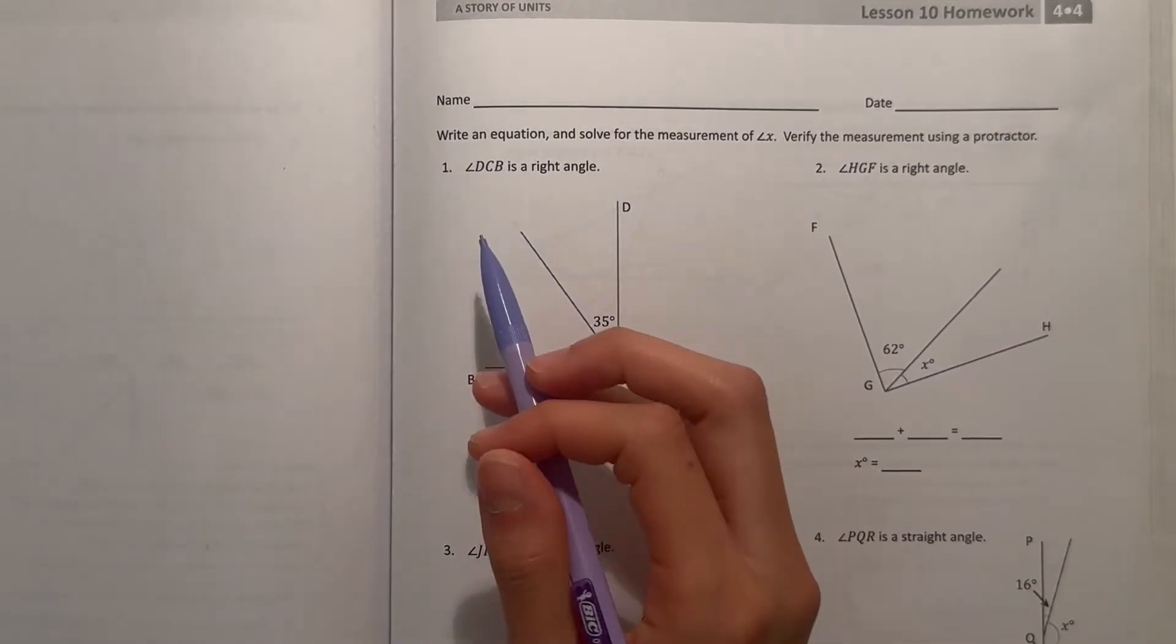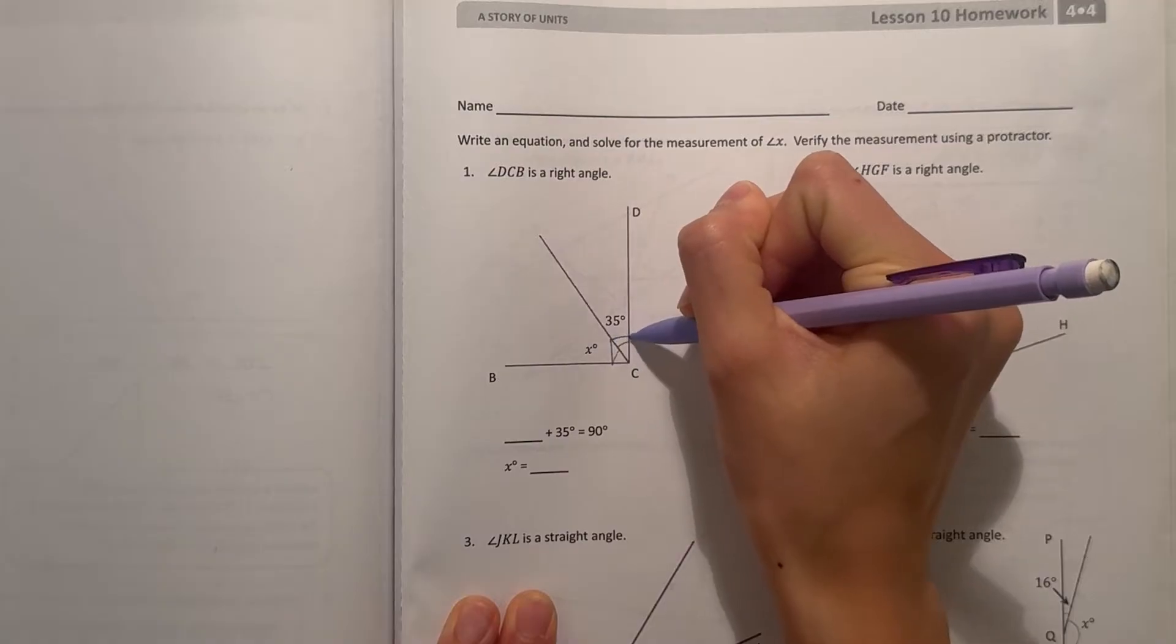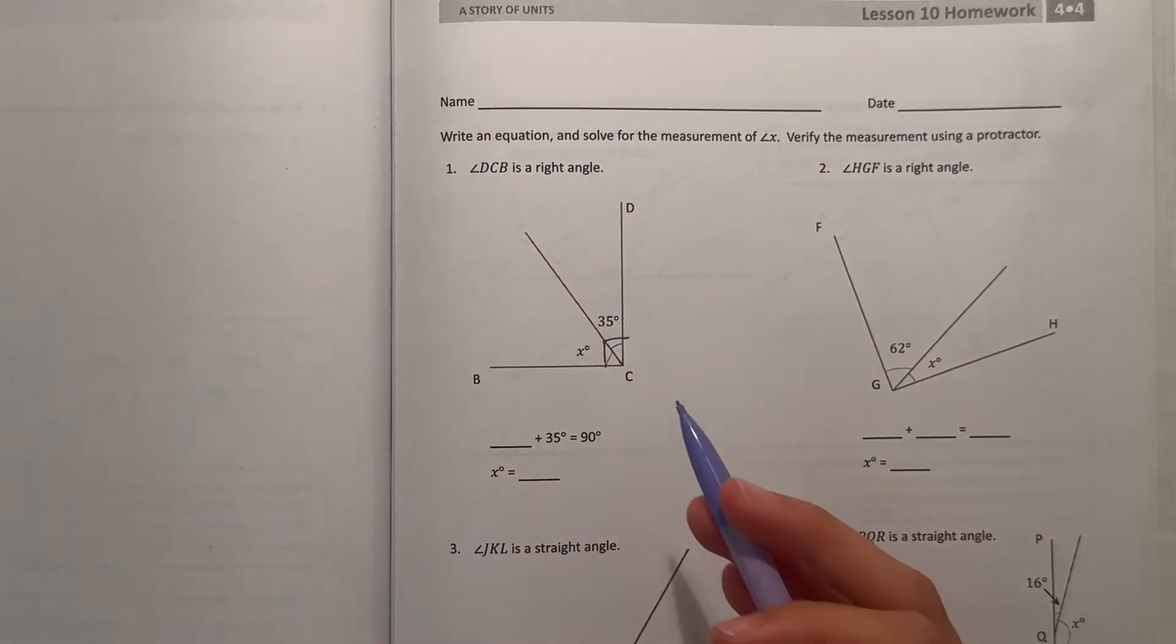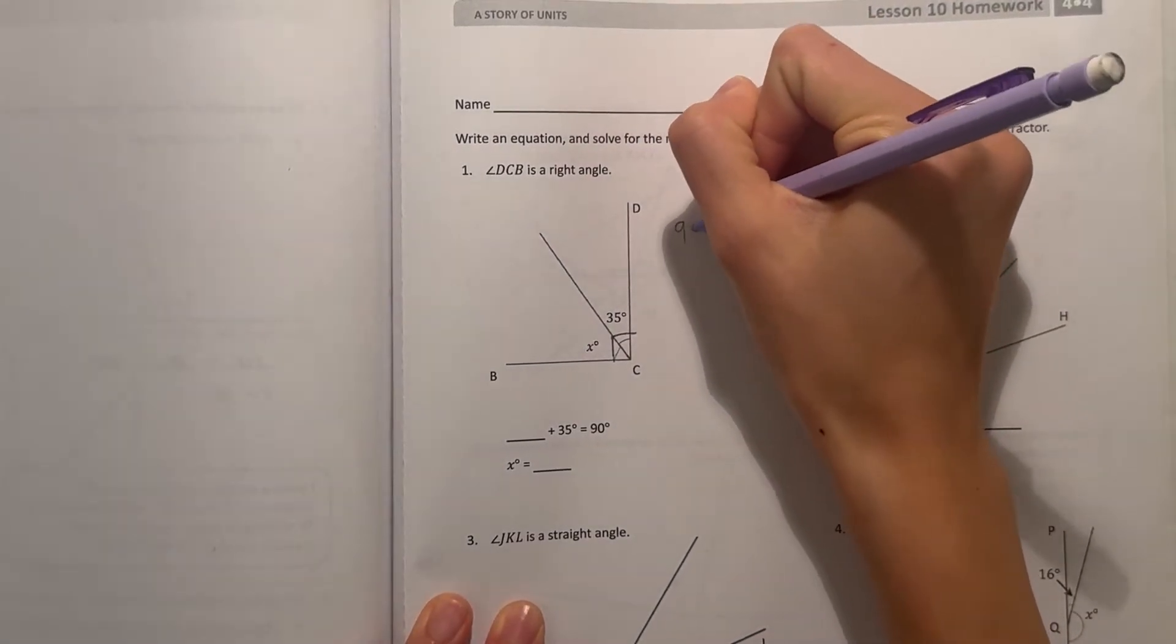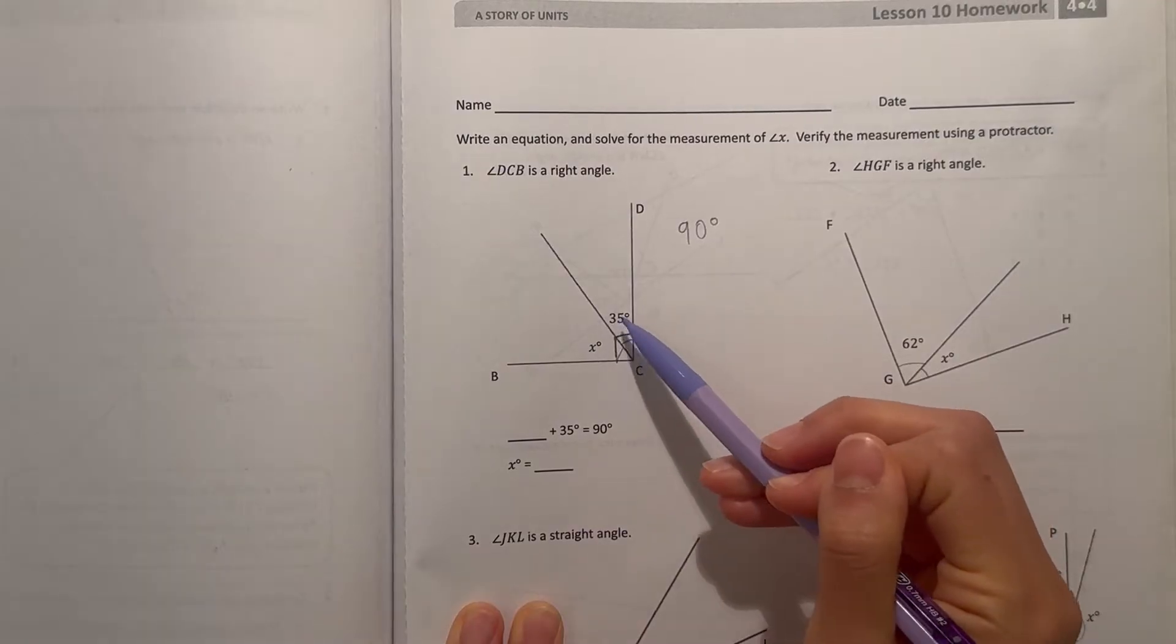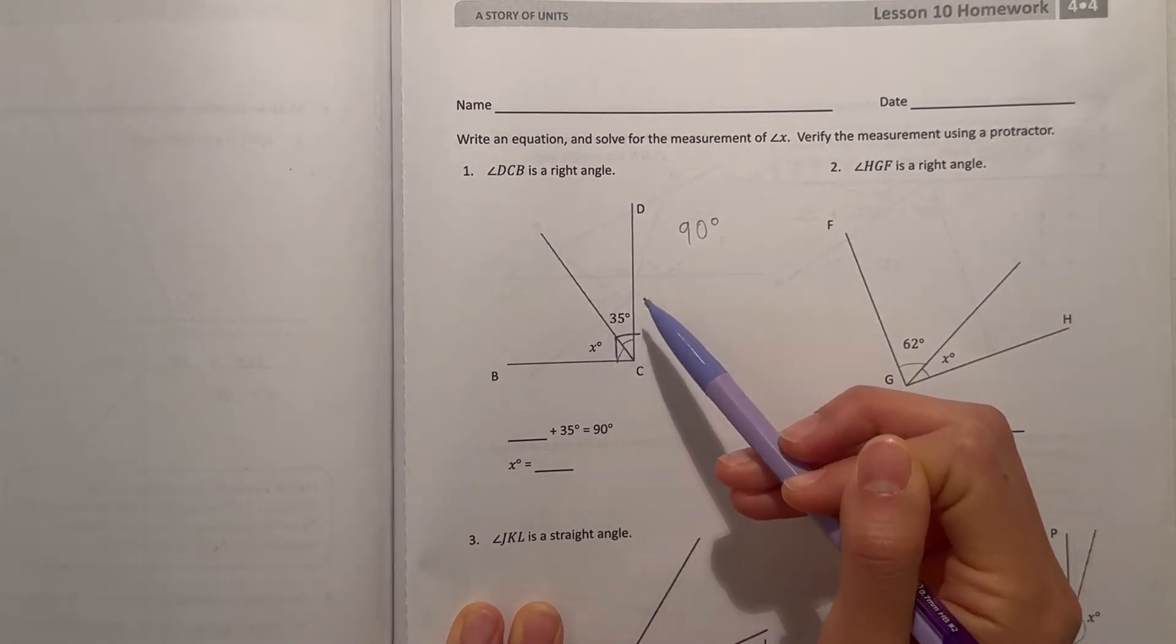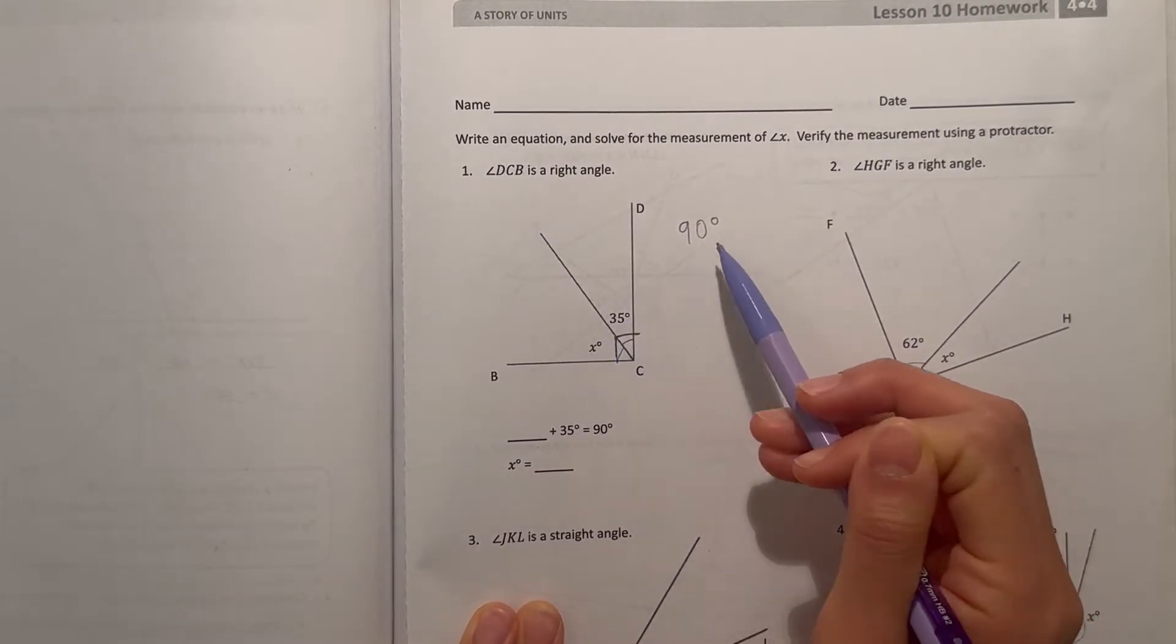All right, so let's see number one. Angle DCB is a right angle, so I can kind of draw a mark to show. So we want to find out what x is. We know a right angle is 90 degrees, so if this part is 35 degrees then x needs to be something so that x plus 35 is 90 degrees.